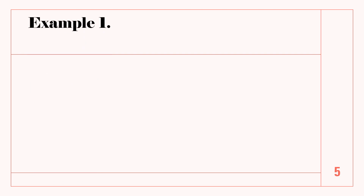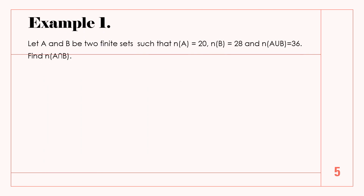Alright, so let's have example number 1. Let A and B be two finite sets such that the cardinality of set A is 20, the cardinality of set B is 28, the cardinality of A union B is 36, and find the cardinality of A intersect B.